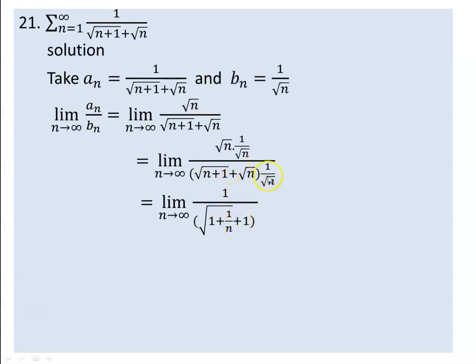The limit of a_n over b_n plus a is equal to n over b_n plus a. As n goes to infinity, this one gets reduced to 0. Then 0 equals 0. The limit existing — is the limit 1 over 2, or 0.5? Is 0.5 a finite nonzero number? Yes.